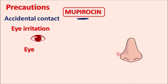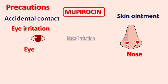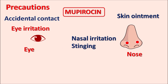When the skin ointment of mupirocin is applied on the nose, it can produce nasal irritation, stinging, nasal discharge, and nasal discomfort. That is why the nasal ointment formulation of mupirocin is preferred, as it shows less nasal irritation.